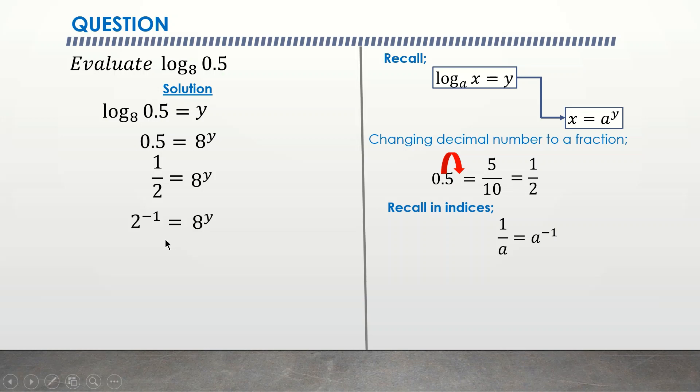The next thing to do here is to equalize the base. So I have to equalize the base. In this case I have to change 8 to index form, which is 2 times 2 times 2. 2 times 2 is 4, times 2 is 8. Now I can put this in index form which gives me 2 raised to the power 3. 1, 2, 3 gives us 2 raised to the power 3. Therefore I have 2 raised to the power negative 1 equal to 8 becomes 2 to the 3 times power y.